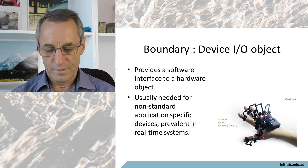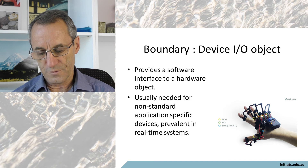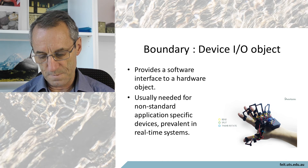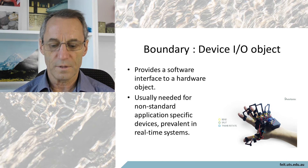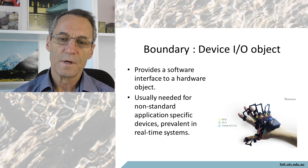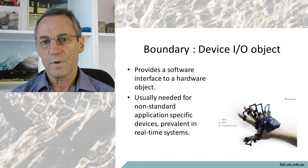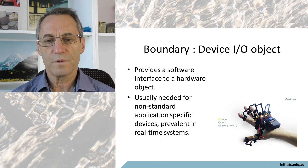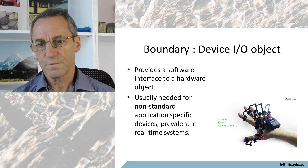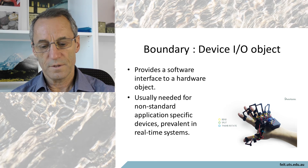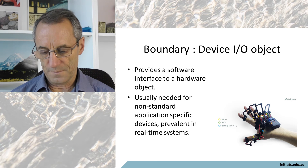An IO object provides a software interface to a hardware object, usually needed for non-standard application-specific devices. This is quite a big deal in real-time control systems where you ultimately have to get your information from some physical device, so the IO boundary object handles that.